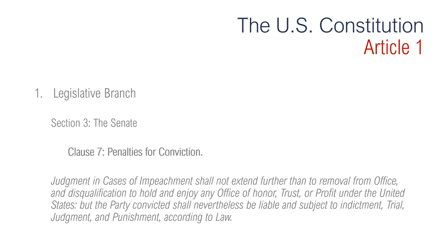Section 3, Clause 7 is regarding penalties for conviction. It states judgment in cases of impeachment shall not extend further than to removal from office and disqualification to hold and enjoy any office of honor, trust or profit under the United States. But the party convicted shall nevertheless be liable and subject to indictment, trial, judgment and punishment according to law. This means on conviction of impeachment charges, the Senate can only force an official to leave office and prevent him or her from holding another federal office. The individual can still be tried in a regular court.